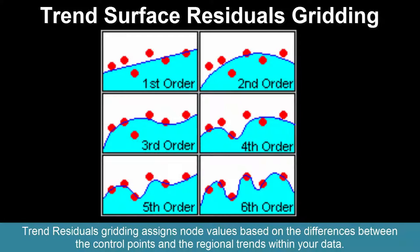Trend residuals gridding assigns node values based on the differences between the control points and the regional trends within your data.